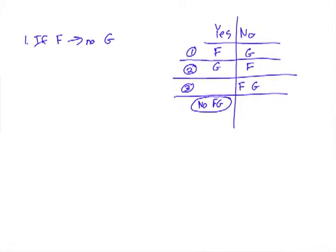Notice, under all circumstances, in the first circumstances, I have G in the no column. In the second circumstance, I have F in the no column. In the third circumstance, I have F and G in the no column. Under all circumstances, I must have G or F or both going into the no column.